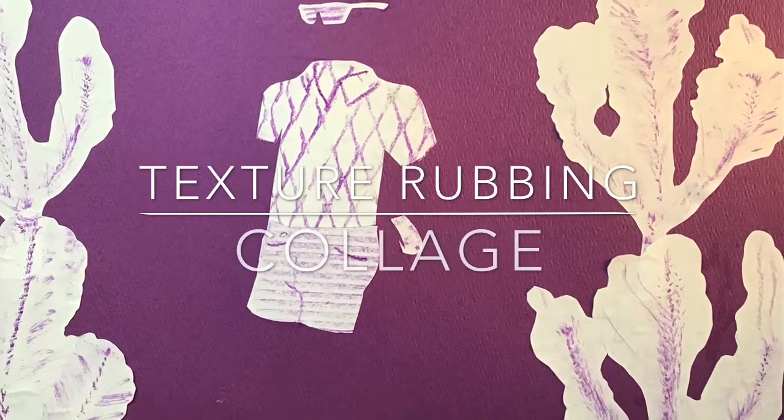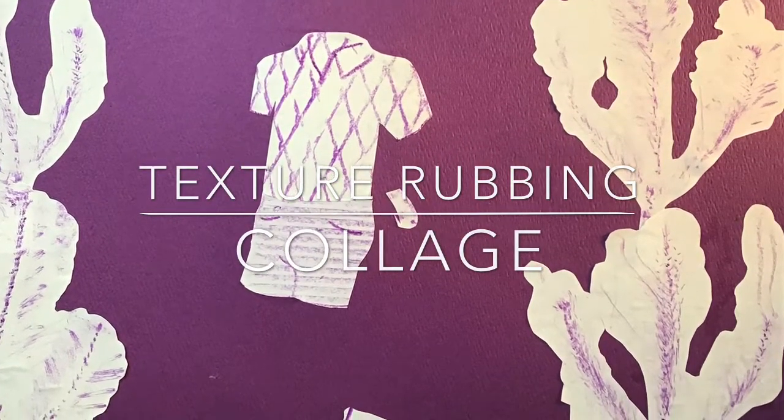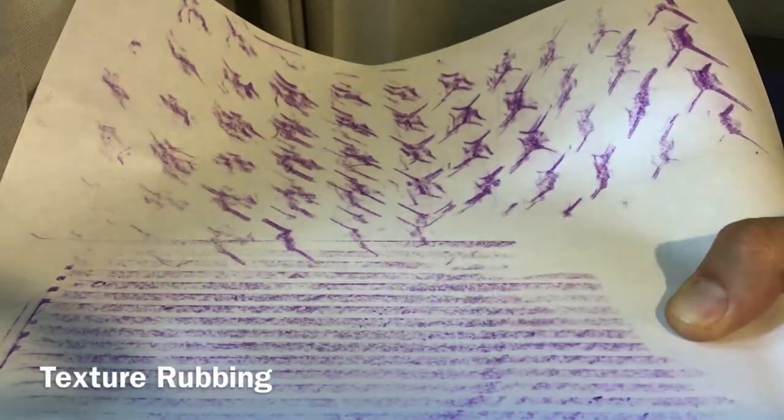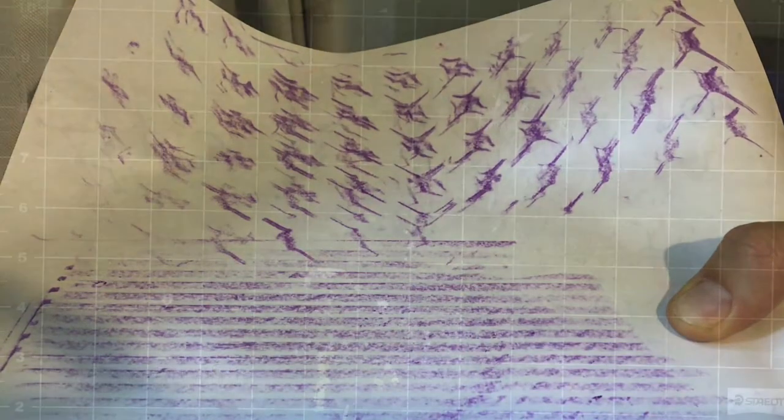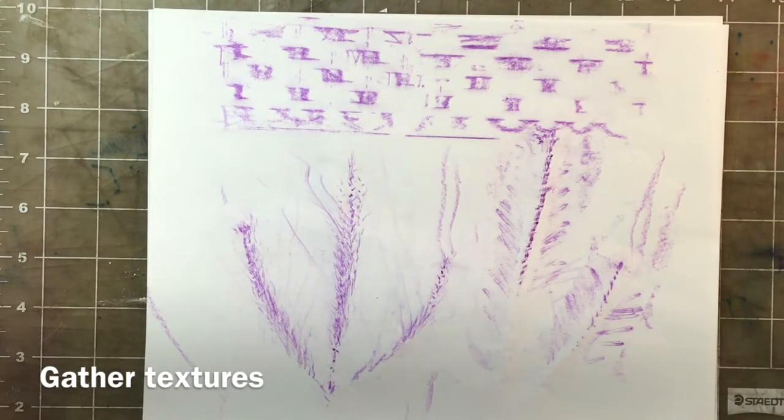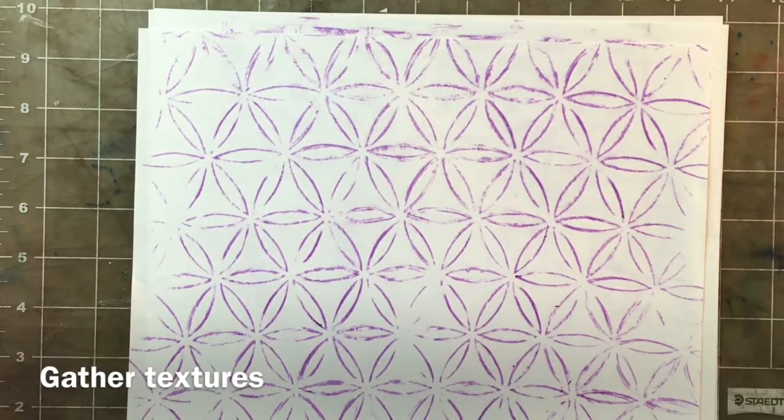Hello and welcome to Texture Rubbing Collage with Mr. Rogers. You might remember from before that texture is the way something feels, and today we're going to use a technique called rubbing to gather that texture in a visual format by getting it on paper.